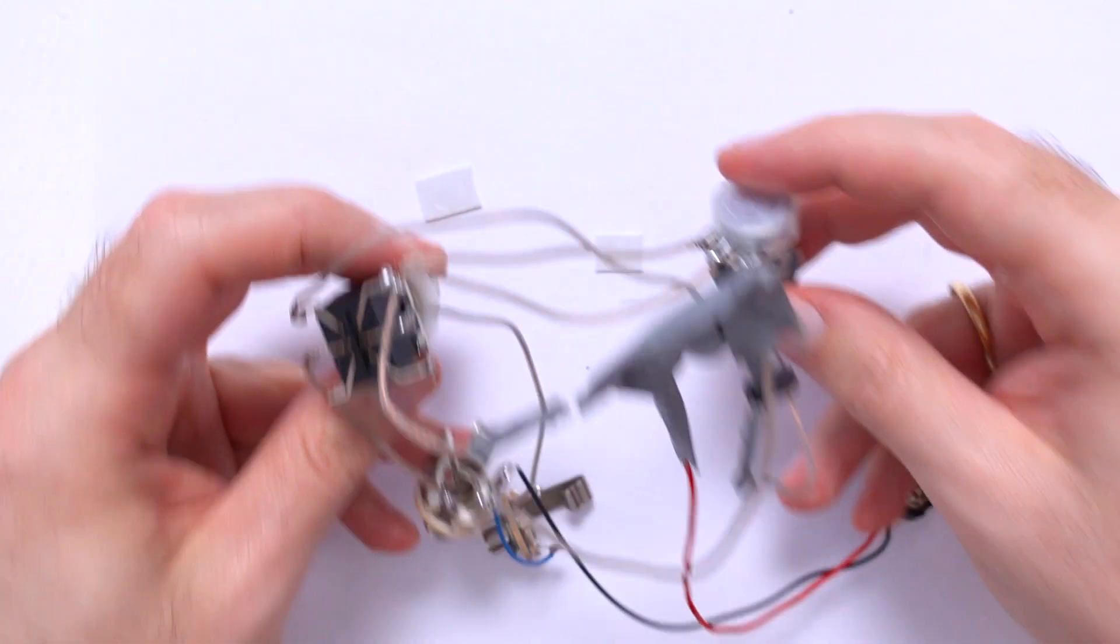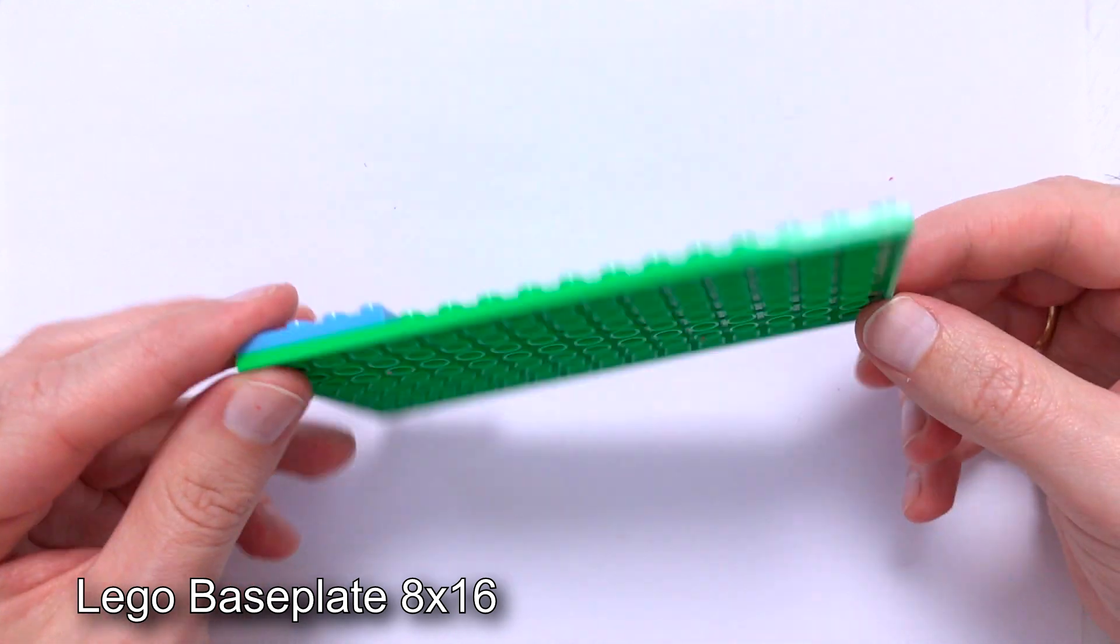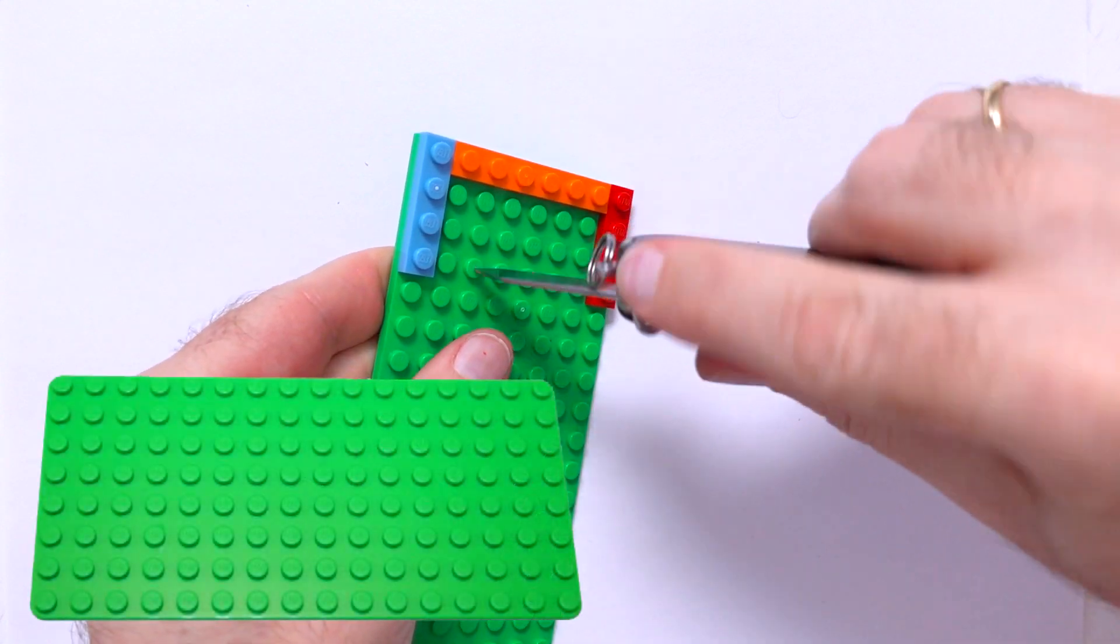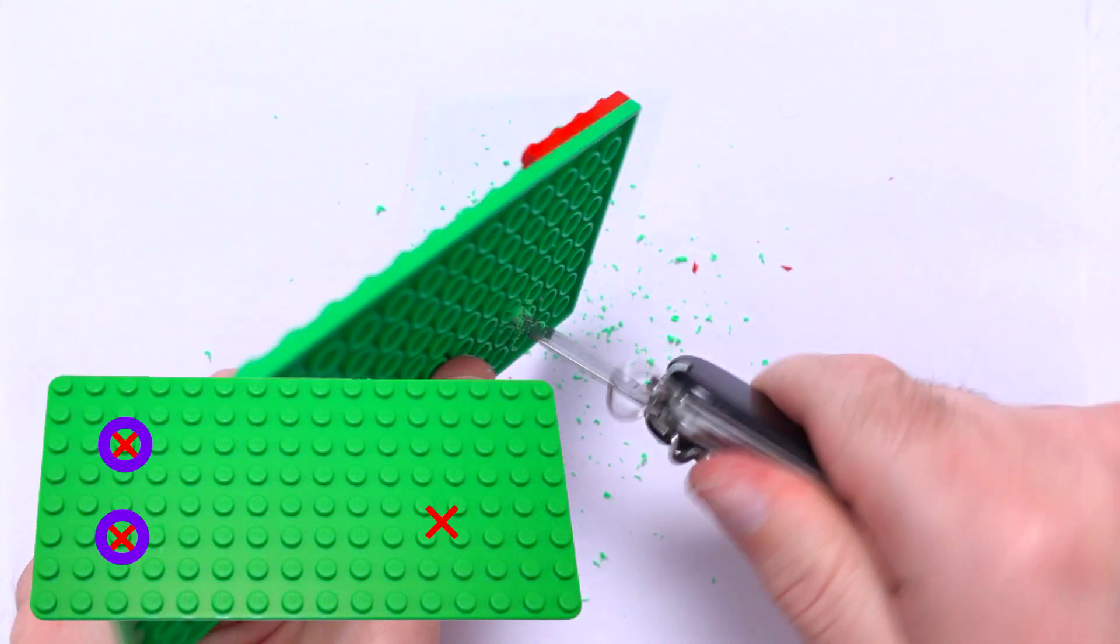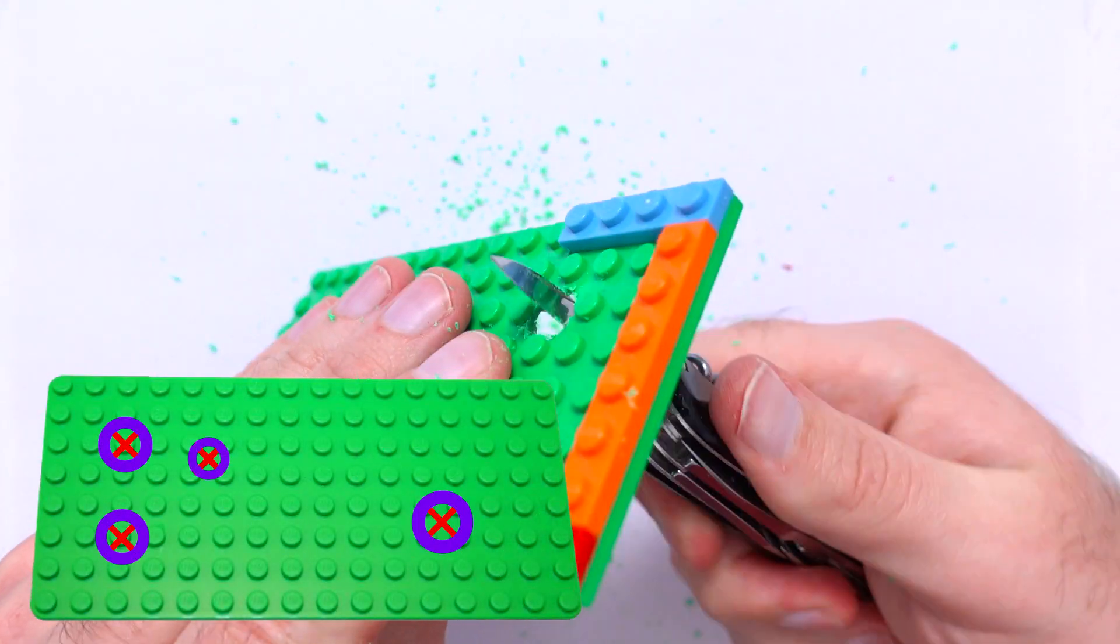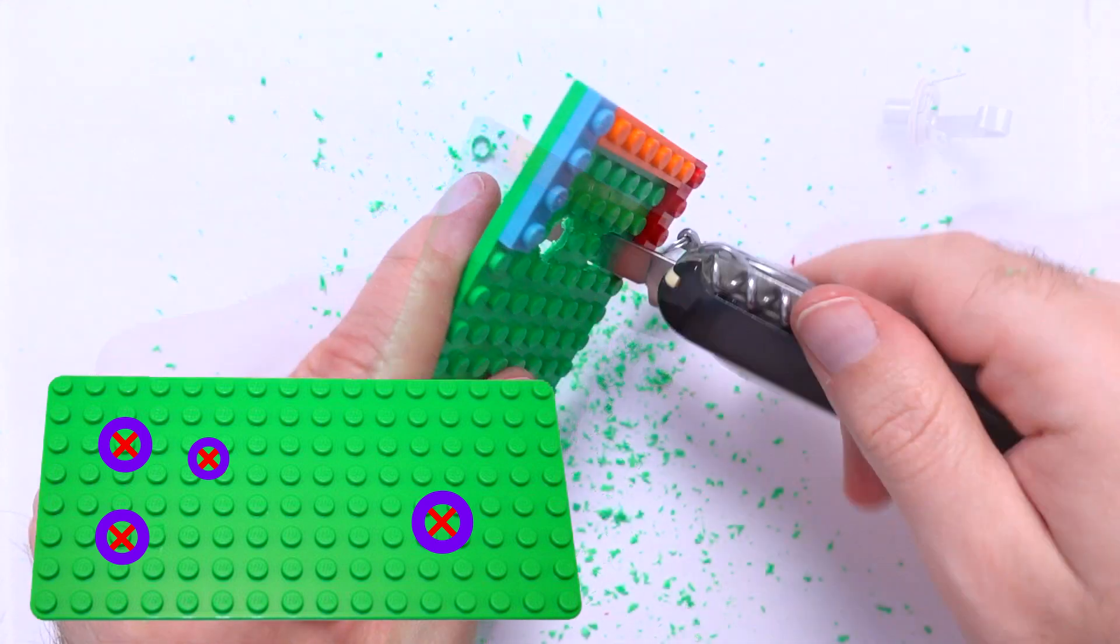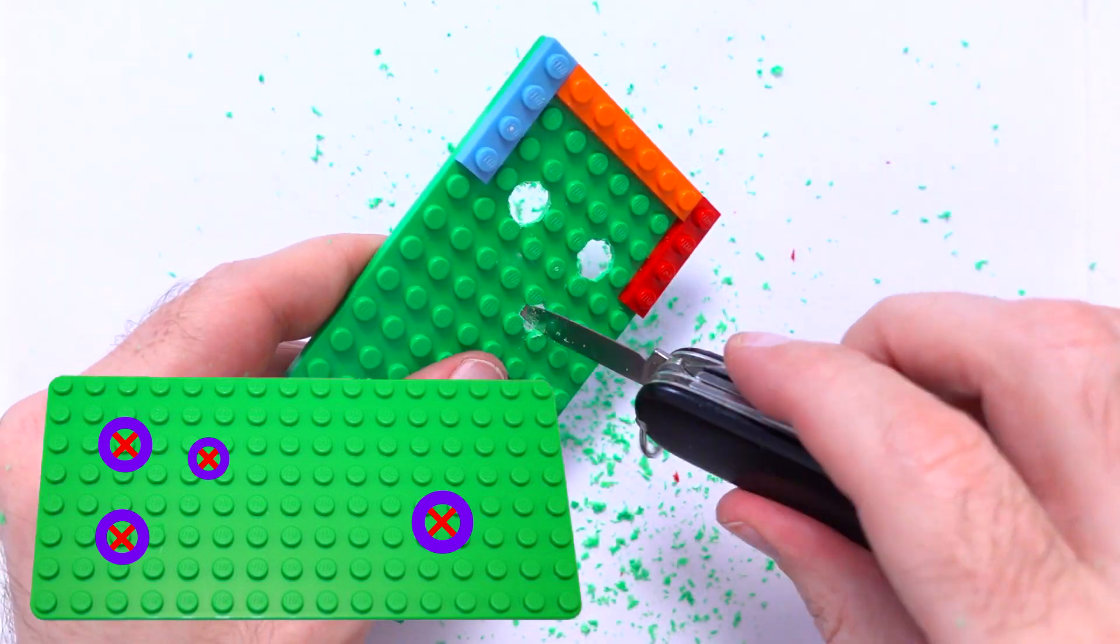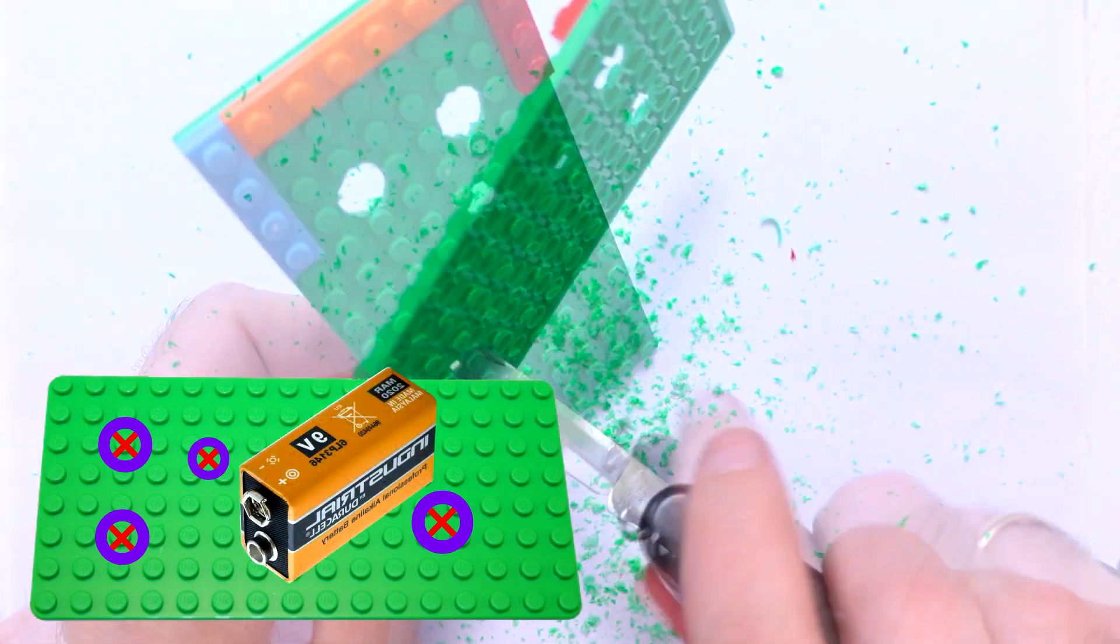It remains only to make pedal enclosure. I use Lego base plate 8 by 16. We need to make 4 holes for 2 jacks, foot switch and potentiometer. This scheme shows exactly where I make the holes. Their asymmetrical location is not accidental. This will allow you to place the battery between them.